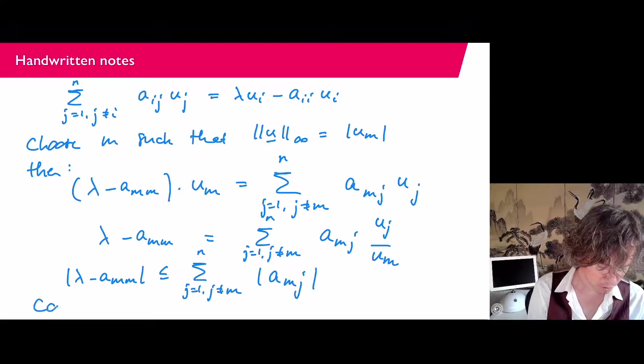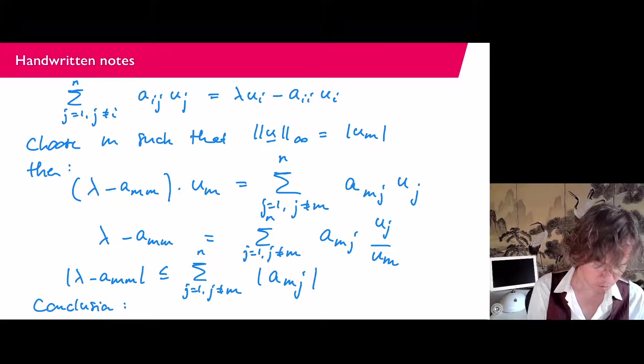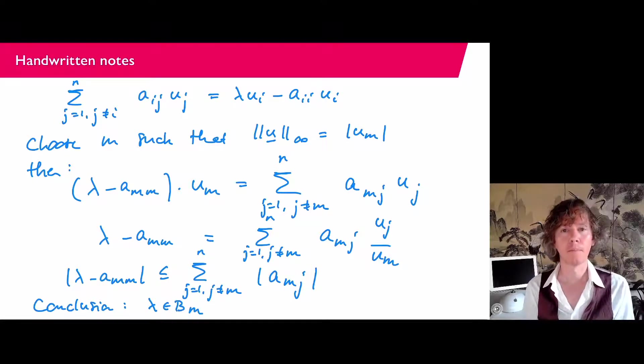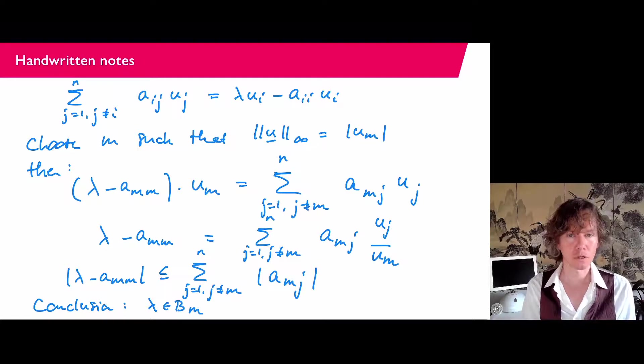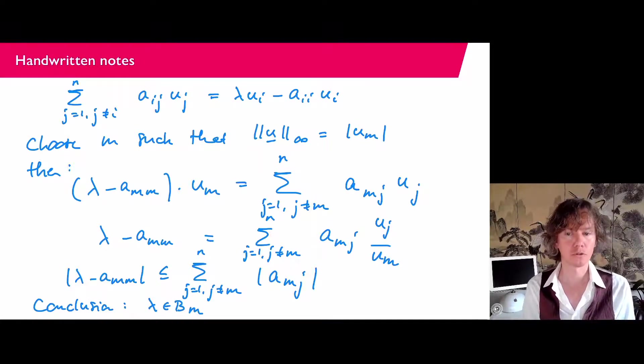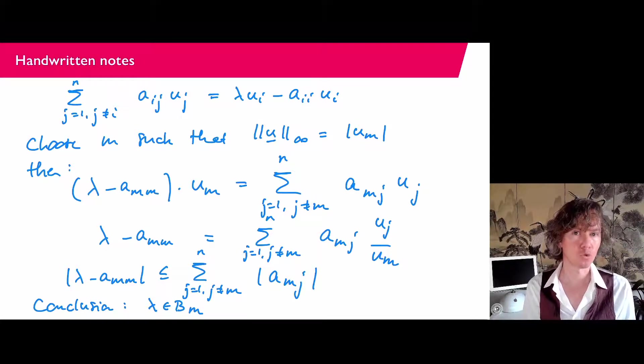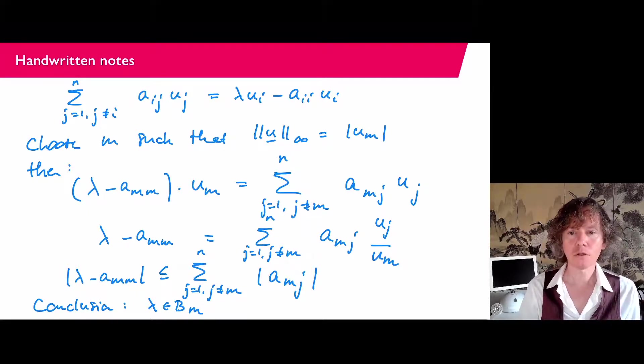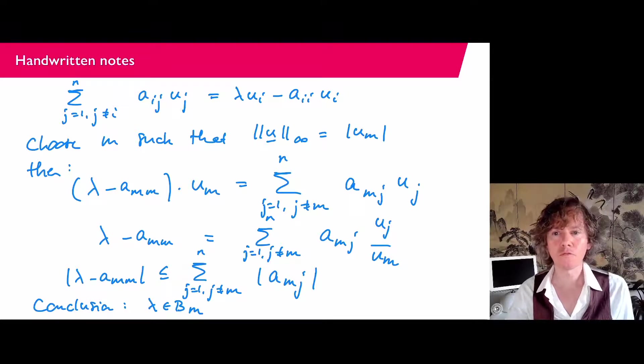And basically what we have found now, conclusion: λ is an element of B_M. So the Gershgorin disk that corresponds to row M of the matrix. So that concludes the proof of this Gershgorin theorem.